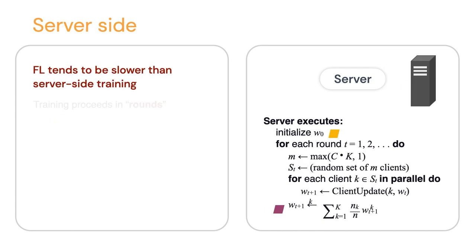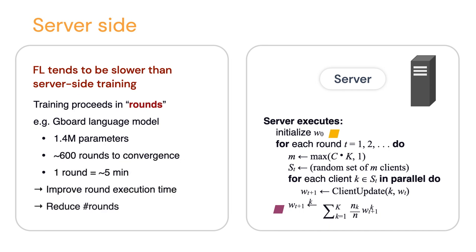Now let's look at what's happening on the server side. The rounds of training can actually be quite slow if we don't pay attention. For example, in Gboard, the language model we learned has about 1.4 to 1.5 million parameters — nothing really big — but it takes about 600 rounds to converge from scratch, and each round took at least about five minutes when we started working on this. That's quite a lot of time to learn a fairly small model.